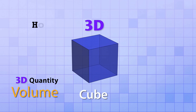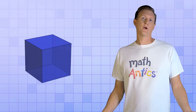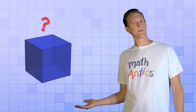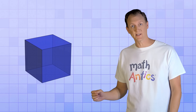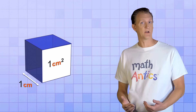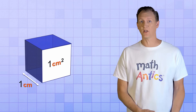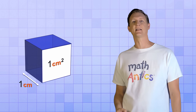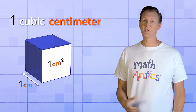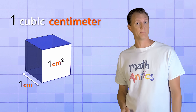Volume tells us how much three-dimensional space an object occupies. Since the cube was made by extending one square centimeter a distance of one centimeter in the third dimension, its volume is exactly one cubic centimeter, which is a common unit for measuring volume. So square units are used to measure area, and cubic units are used to measure volume.